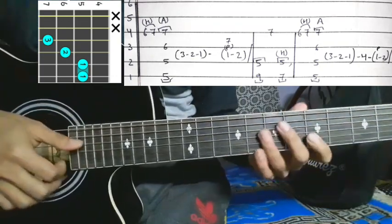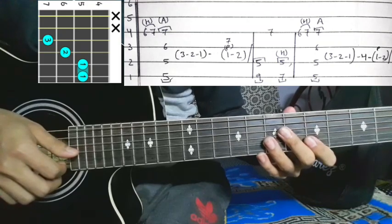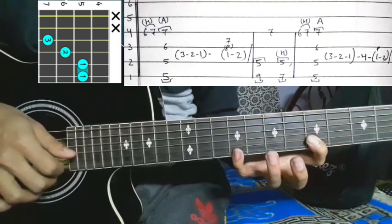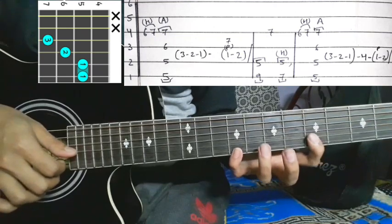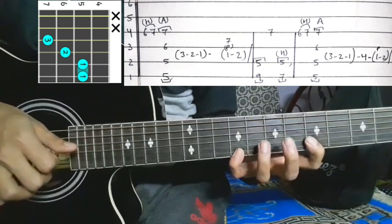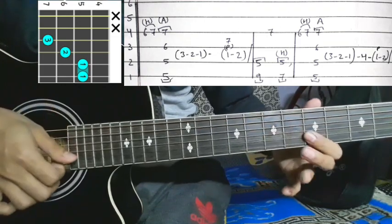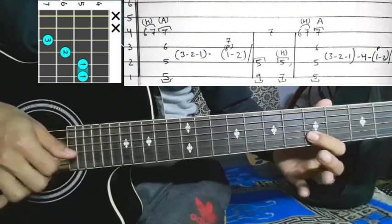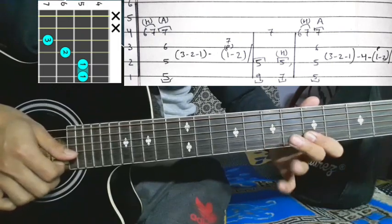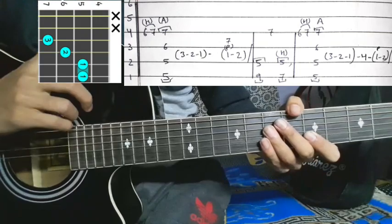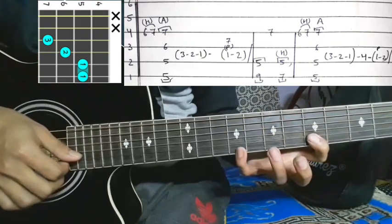After the first section comes the second section. You're going to need the second string at five, then the first string at nine. Five and nine with picking, then first string goes to seven. Hammer-on - second string five, first string seven. That's the second part.